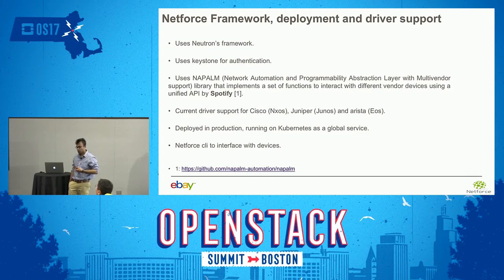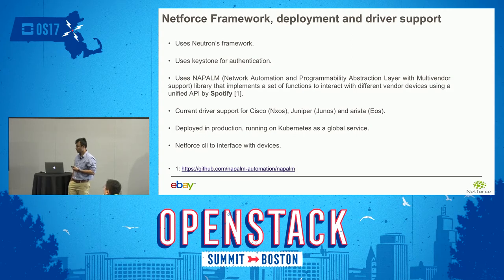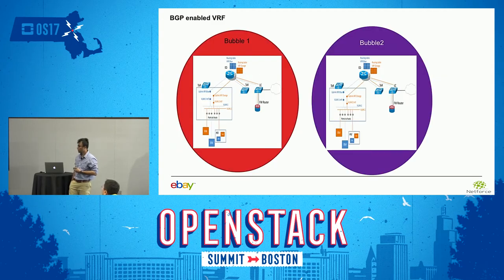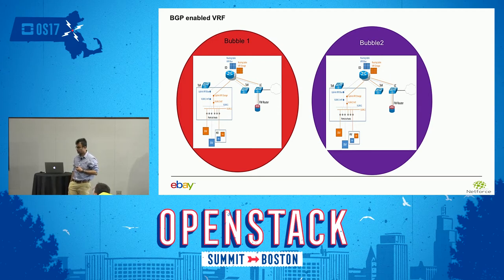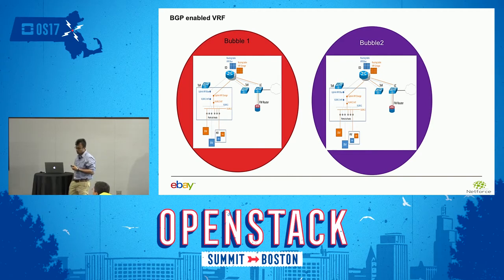It's deployed in production, running on Kubernetes as a global service, with CLI to handle all the operations. This is the base view of a BGP-enabled Werf, which I want to highlight since we'll be targeting it for the bare-metal use case. This is what a bubble looks like in a Werf — it has a set of distribution switches and TORs underneath the bare-metals and the hypervisors.